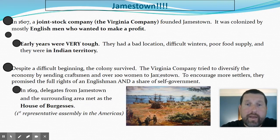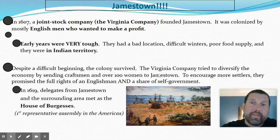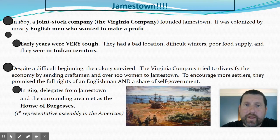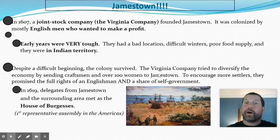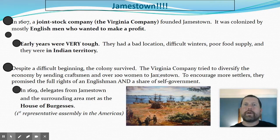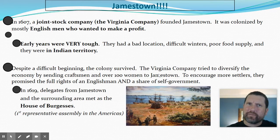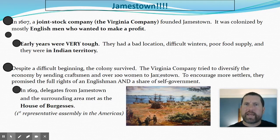The early years were very tough — they don't know the land, they have brutal winters, poor food supply, and they're in Indian territory with conflicts. Nevertheless, the colony does survive and spreads. England sends more craftsmen and women to encourage more settlers, offering the full rights of an Englishman and a share of self-government in this new world. That's important because when we eventually get to the cries for independence, some of that was kind of promised or believed to have been promised by some of the early English settlers — that yes, they are English subjects, but they get to strike out on their own.